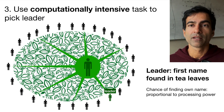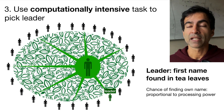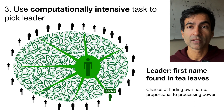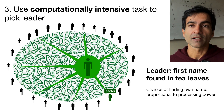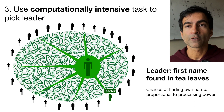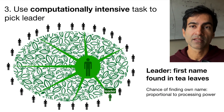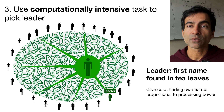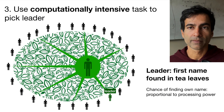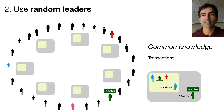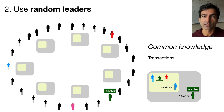This means that if an entity wants to take over and control leadership, they will have to spend computational power comparable to the amount being spent by everybody else in the Bitcoin network. And that's what makes it very hard for any entity — even a very powerful one like a government — to control what's going on in the network. Once this leader has been picked and everybody knows about the leader, the leader signs off on what the next transaction is that goes onto the common knowledge.